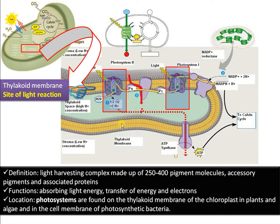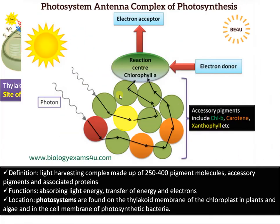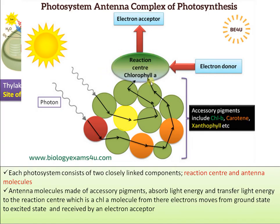Photosystems are light harvesting complexes made up of pigment molecules, accessory pigments, and associated proteins. Photosystems are located on the thylakoid membrane of the chloroplast in the case of green plants and algae, whereas in the case of bacteria these photosystems are located on the cell membrane. Each photosystem consists of two closely linked components: a reaction center chlorophyll molecule, and accessory pigments called antenna molecules.